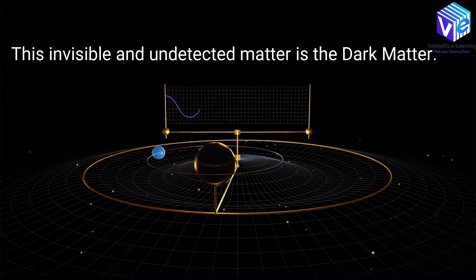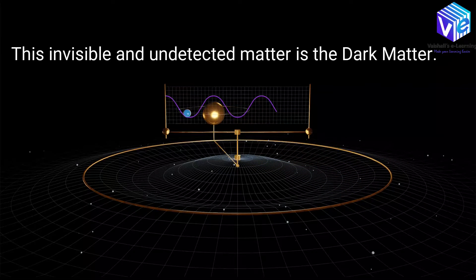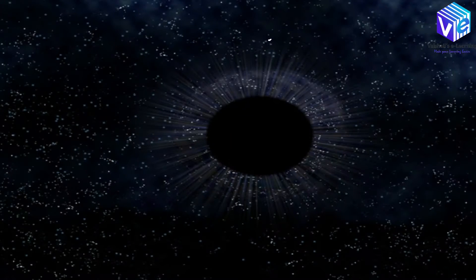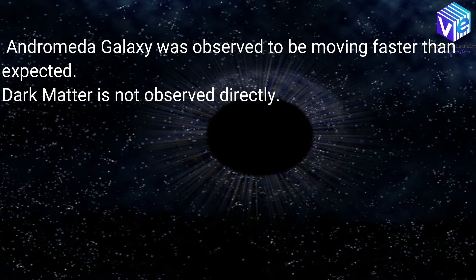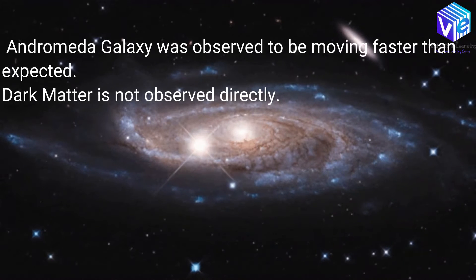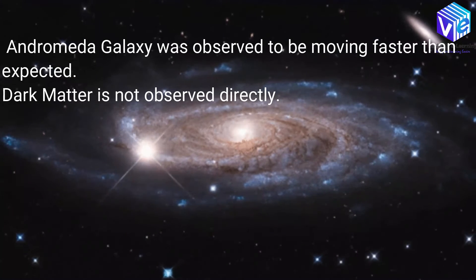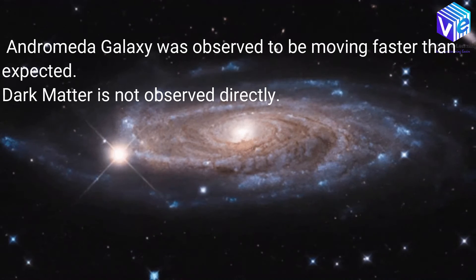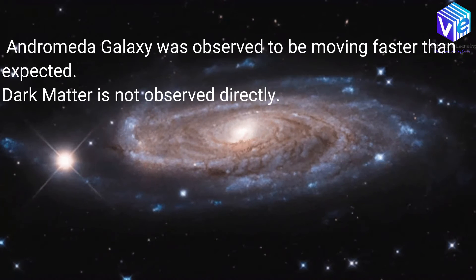This extra matter, which is invisible and undetected, has been termed dark matter. Gradually, many astronomers started researching dark matter. When the Andromeda Galaxy was observed to be moving faster than expected, dark matter took center stage in astronomical research.